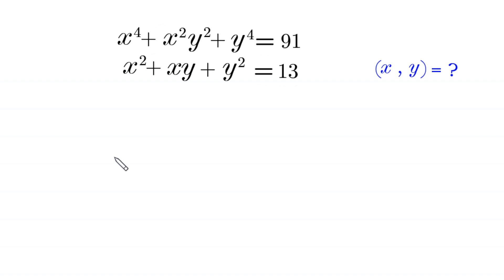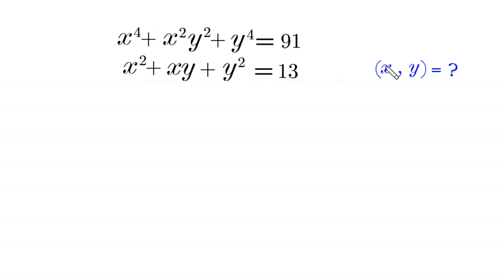Hello everyone, you are welcome. We are going to solve this very nice system of equations: x to the power 4 plus x squared y squared plus y to the power 4 is equal to 91, and x squared plus xy plus y squared is equal to 13. Our job is to find all possible values of x and y.